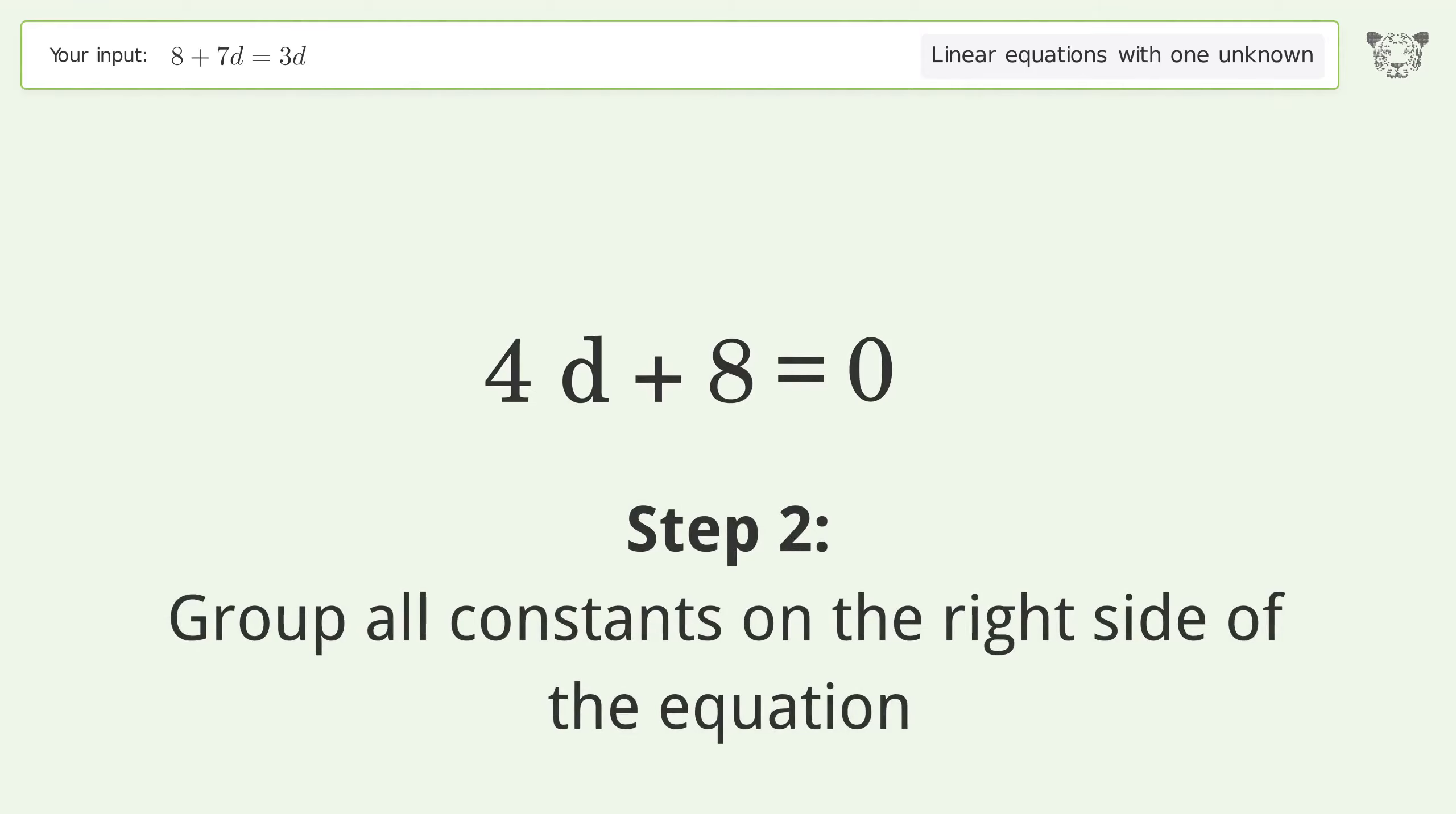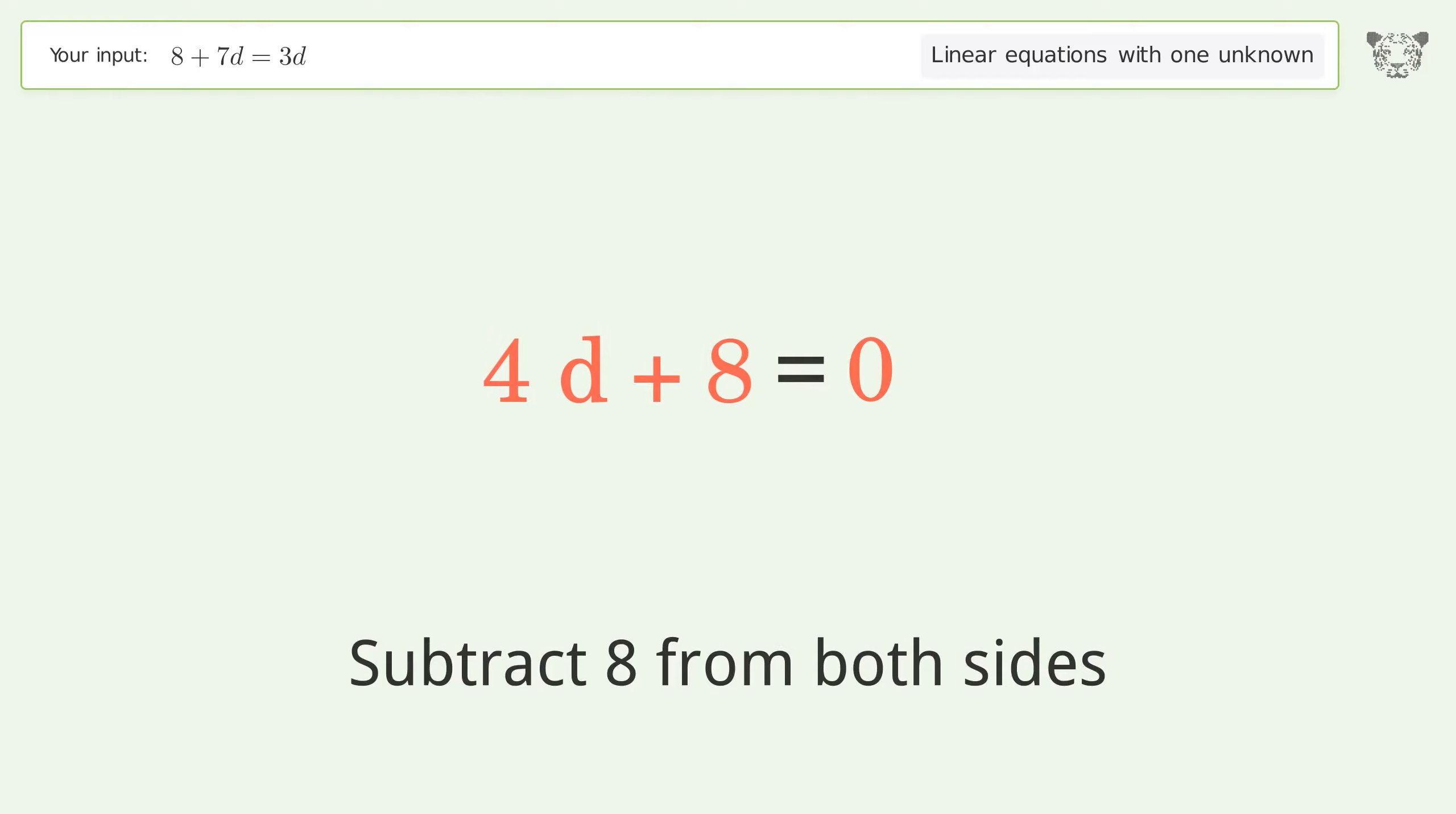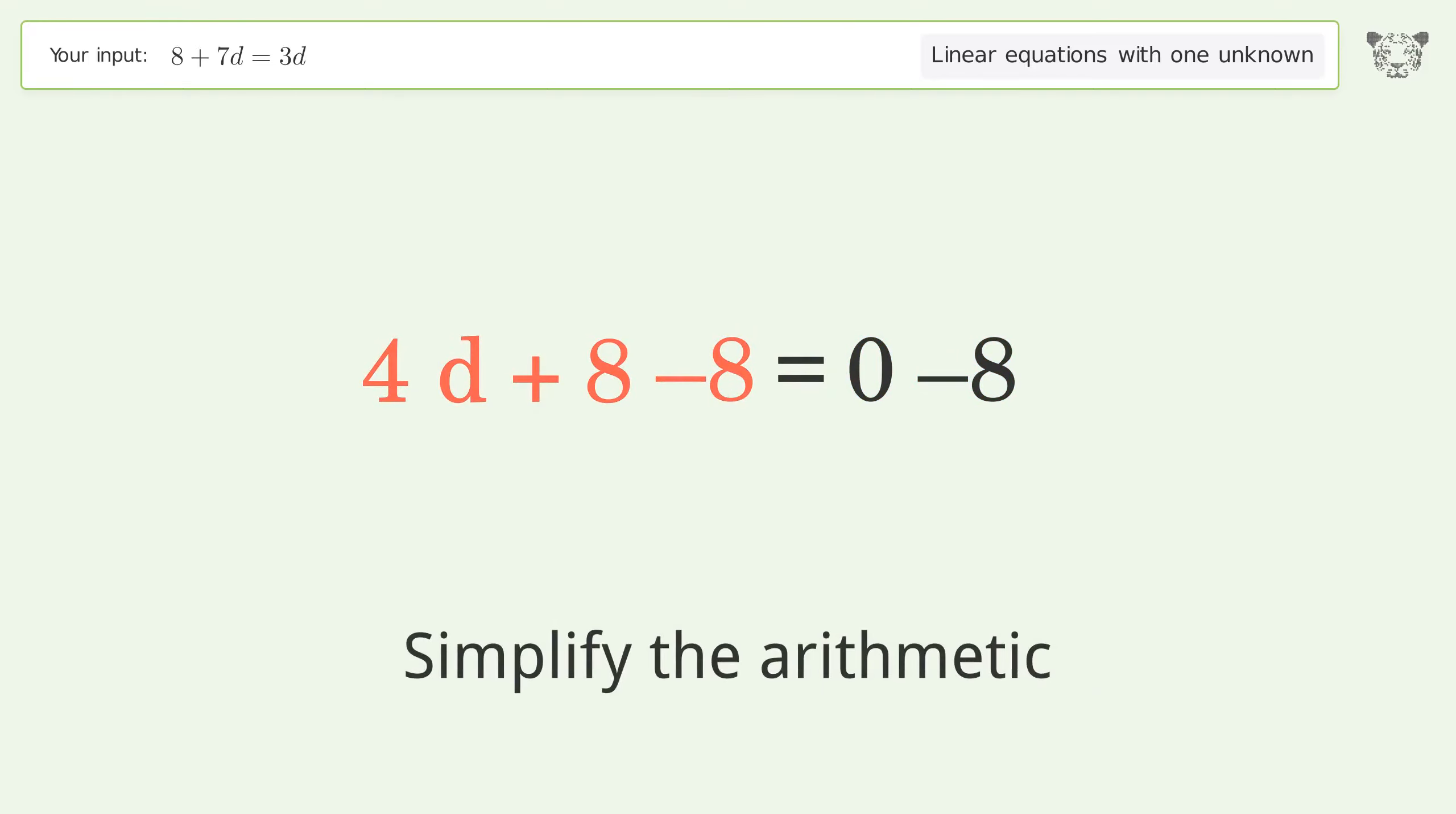Group all constants on the right side of the equation. Subtract 8 from both sides. Simplify the arithmetic.